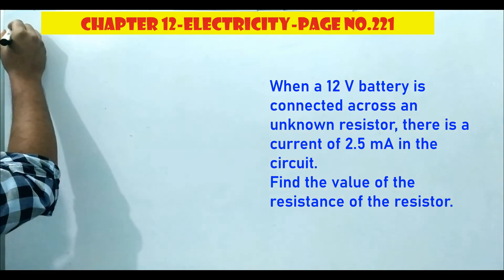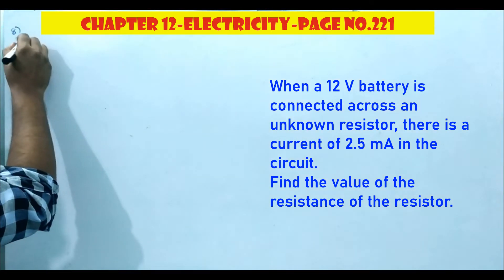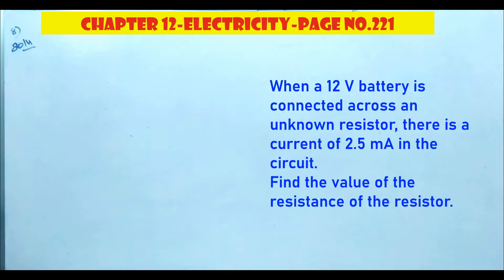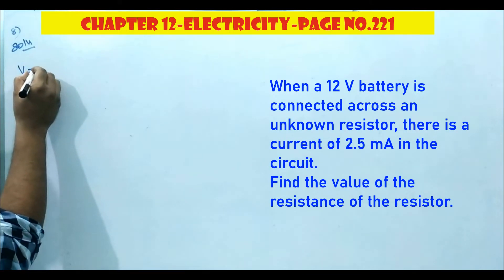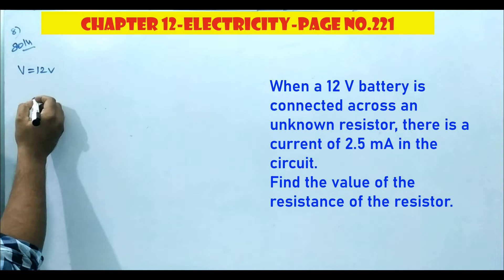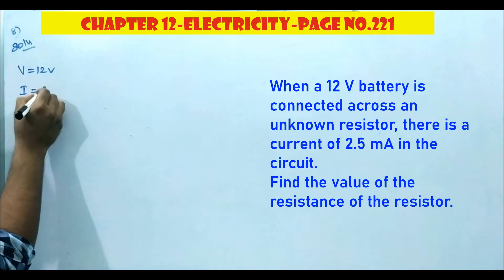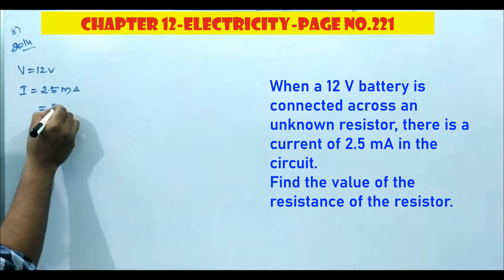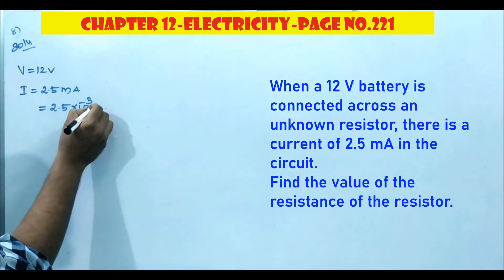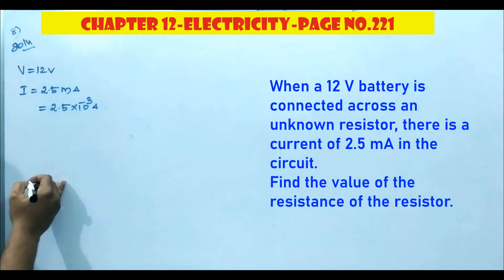Exercise 8, the question is: when a 12 volt battery is connected across an unknown resistor, there is a current of 2.5 milliampere in the circuit. Find the value of resistance of the resistor. So potential V is 12 volt, and the current I is 2.5 milliampere, that means 2.5 into 10 power minus 3 ampere.